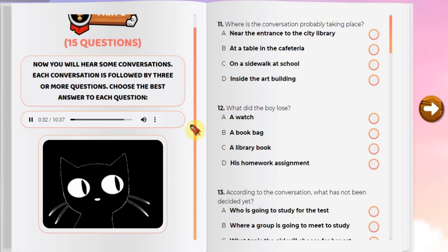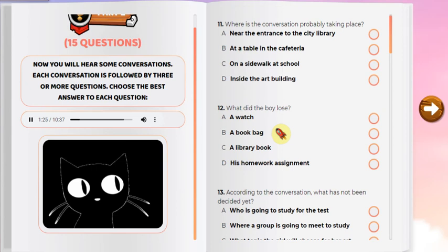Hi Tommy, are you on your way to the cafeteria? No, I was on my way to the library to return a book, but now I'm looking for my watch. It must have fallen off somewhere here in the grass. It was a gift from my father so I really want to find it. I'd like to help you look for it, but I'm heading to the art building. I made an appointment with my art teacher to talk about a homework assignment and I don't want to keep him waiting. That's okay — oh, there it is! By the way, do you want to study for tomorrow's history test with me and some other people from our class after school? We haven't decided where we're going to meet yet, probably at the city library. That sounds like a good idea. I'd like to join you. I'm having lunch with the others so we'll know where we're meeting by the time I see you in science class. All right, I'll see you then.